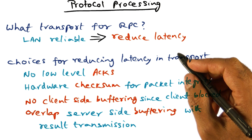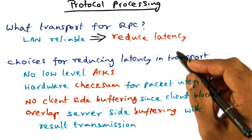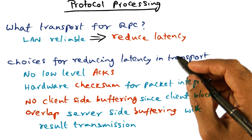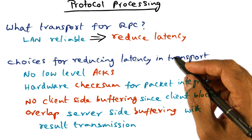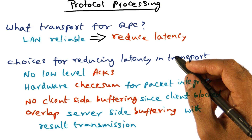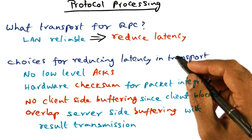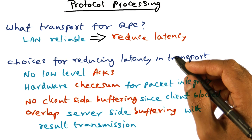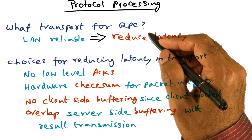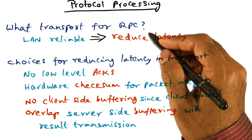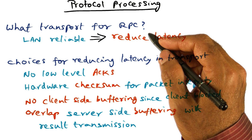These are all the things that are happening in software — things that as OS designers, we have a chance to do something about. And what we saw were techniques that we can employ for each one of those: reduce the number of copies, reduce the number of context switches, and make the protocol processing lean and mean so that the latency involved in RPC is reduced to as minimum as possible from the software side.